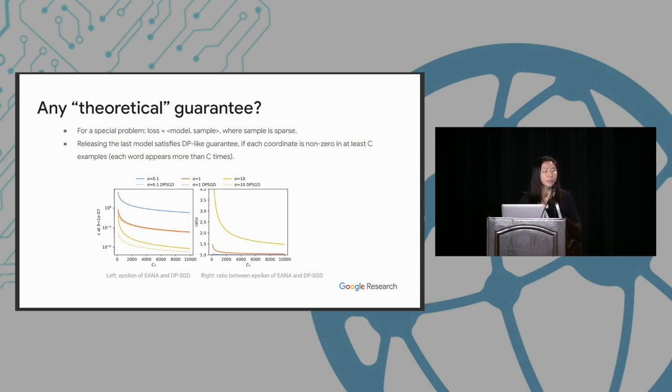The privacy guarantee we provide with IANA is kind of data dependent. That means we do require the training dataset to have certain properties. And as shown in this figure, with such constraints, still we see that DPSGD provides better privacy compared to IANA. But the gap between IANA and DPSGD actually shrinks as the dataset gets larger and the standard deviation gets smaller.